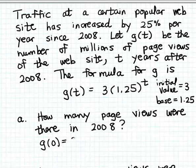So g of zero is going to be 3 times 1.25 raised to the zeroth power. And of course, since 1.25 is a non-zero real number, then 1.25 raised to the zeroth power is just going to simplify to 1. So we end up here with 3 times 1, or 3. Notice of course that's the initial value of the exponential function - is the output here when we evaluate g of zero.